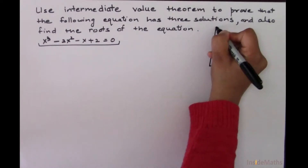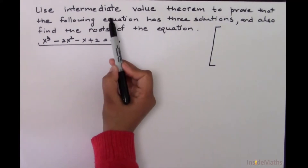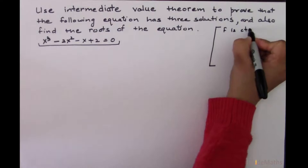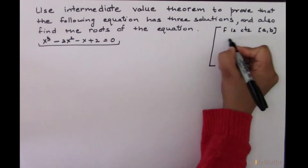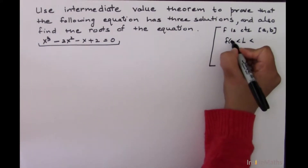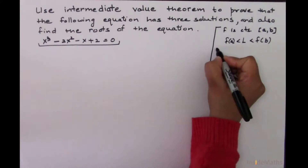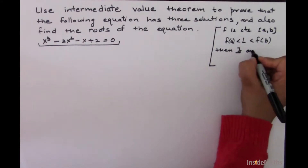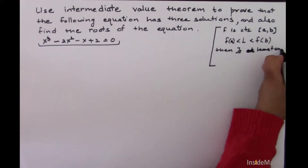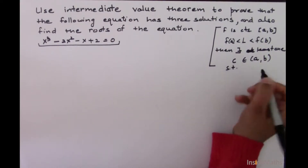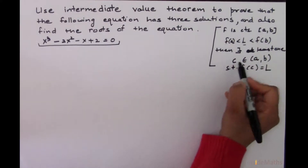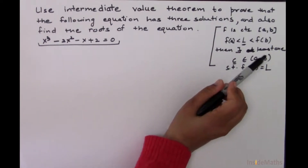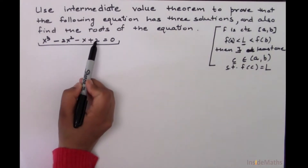The Intermediate Value Theorem states that f must be continuous on the closed interval a to b, and there must be a point L between f of a and f of b. Then if these two conditions are true, there must exist at least one c belonging to the open interval a to b such that f of c equals L. This is the Intermediate Value Theorem.